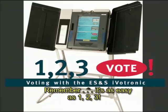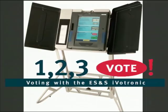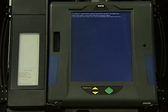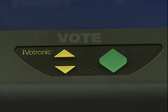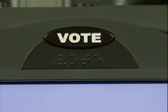Many iVOTRONIC voting machines also have audio-only ballots for people with visual impairments. To select a visual ballot, touch the screen. To select an audio ballot, press the diamond-shaped button. Voters use the two triangle-shaped buttons and the large diamond-shaped button below the touch screen to move through the ballot and cast votes. The large button above the touch screen is used to submit the ballot after all selections are made. In addition to their unique shape, these buttons are labeled in Braille.